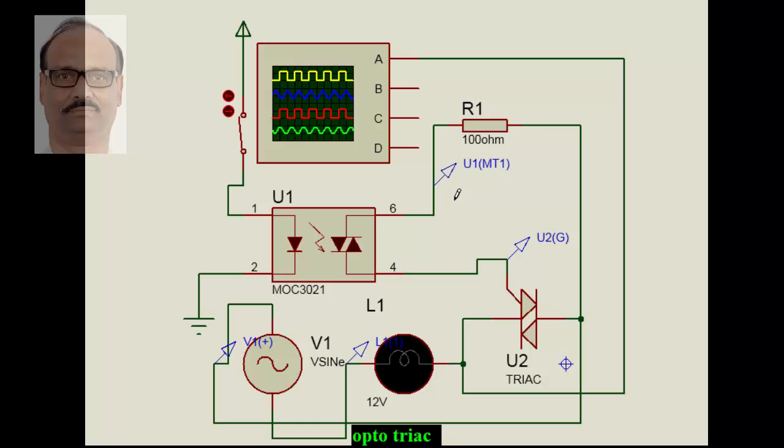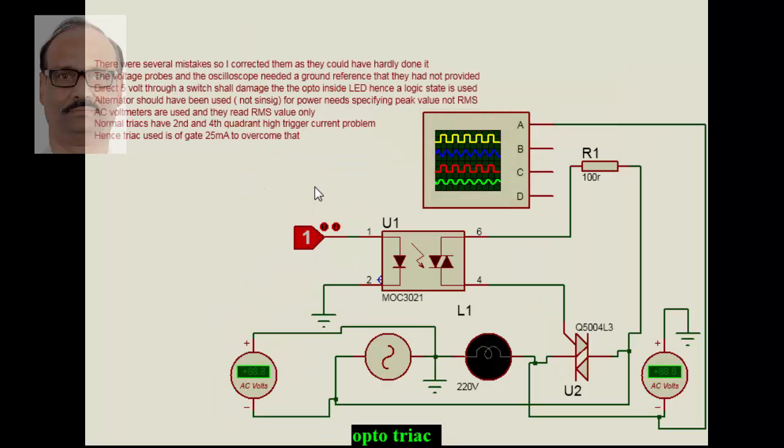Now we will see how to go for a real circuit after we modify this. Let's look at this circuit. What we have done here: we have taken, instead of voltage probes, voltmeters both across the supply and also across the load.